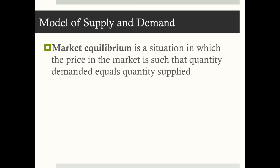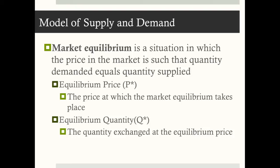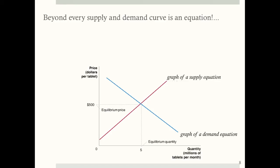Putting supply and demand together, their interaction creates a market equilibrium, which is a situation in which the price in the market is such that quantity demanded equals quantity supplied. There are two parts to a market equilibrium: the equilibrium price, P star, which is the price at which market equilibrium takes place, and the equilibrium quantity, Q star, which is the quantity exchanged at the equilibrium price. Here on the graph, equilibrium occurs at $500 and 5 million tablets.